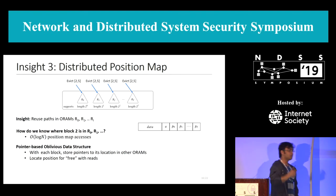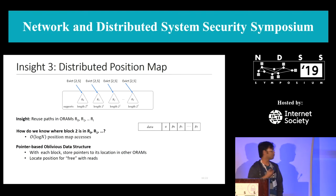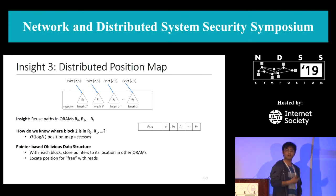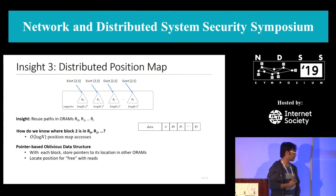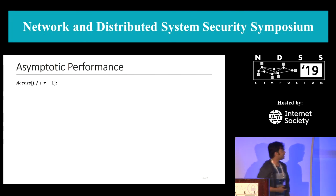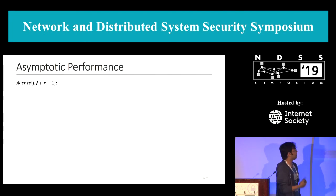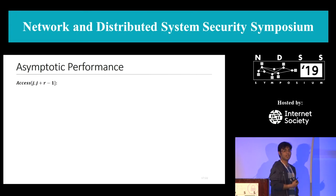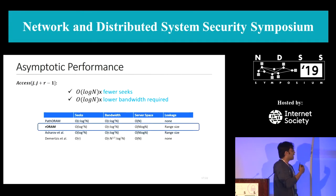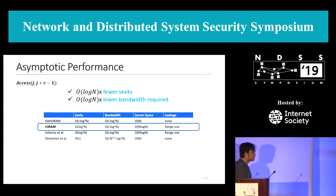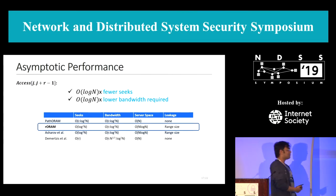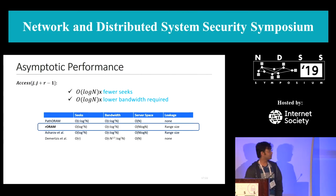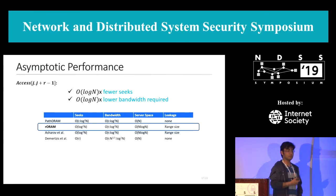To solve this, we develop a distributed position map construction that allows you to find the location of a block in all other ORAMs for free when you read it from a particular ORAM. With this, the asymptotic performance when accessing a range of size R is O(log² n) disk seeks and O(R log² n) bandwidth — O(log n) times fewer seeks and O(log n) times lower bandwidth compared to previous range ORAM constructions.